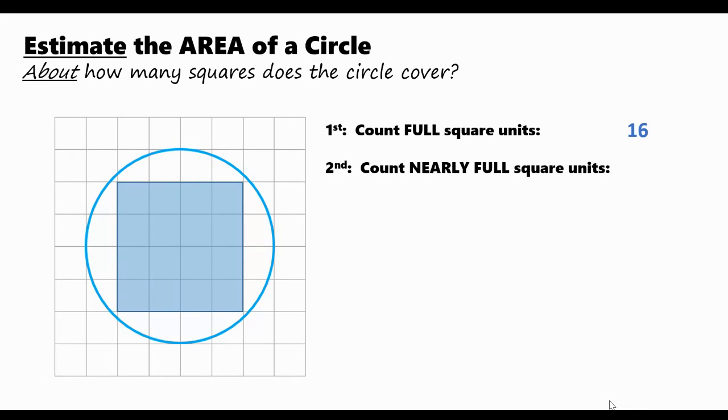Next, we'll take a look at nearly full square units. Look at this portion of the circle. The circle covers almost an entire square unit, but not completely. Seeing as it's only missing a little piece, we'll consider this as one because we're trying to find an estimate, about a number that's close to the exact area of the circle.